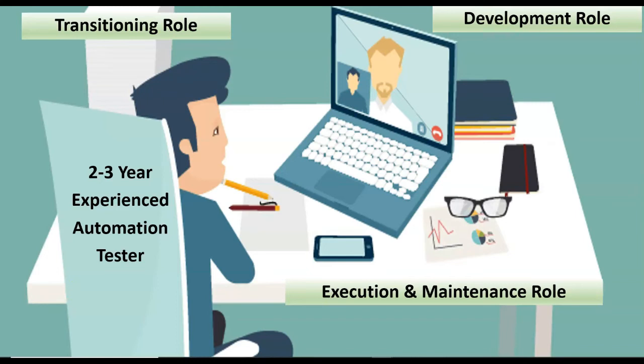That is also your second important role when you have 2-3 years of experience as an automation tester. The third important role is script execution and maintenance. Assuming scripts execution is carried out by your automation team or your manual team — because once you complete your automation scripts and hand them over to the manual team members, they can also handle or execute those scripts.